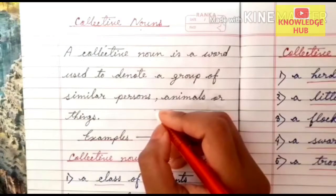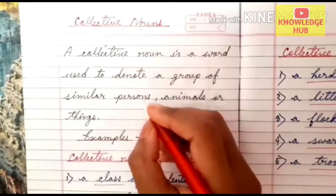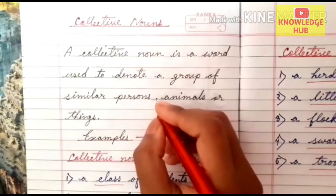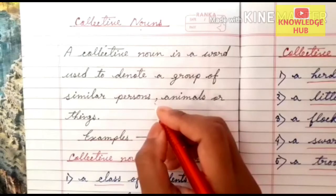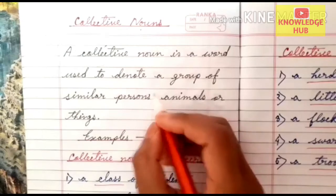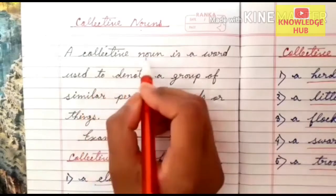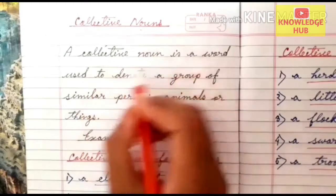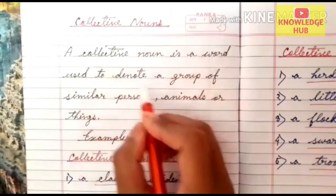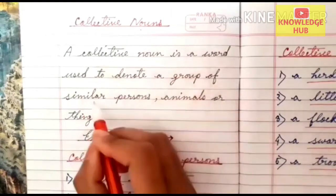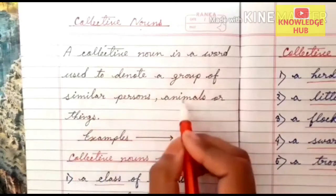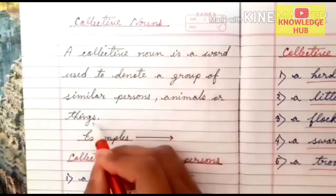Hello students, today we are going to learn about collective nouns of English grammar. A collective noun is a word used to denote a group of similar persons, animals or things.